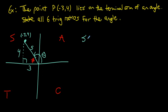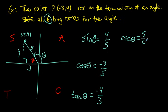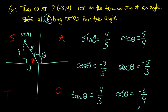The sine ratio is positive: sin θ = opposite/hypotenuse = 4/5. Cosine must be negative: cos θ = −adjacent/hypotenuse = −3/5. Tangent is also negative: tan θ = −opposite/adjacent = −4/3. For the reciprocal ratios: cosecant = 5/4, secant = −5/3, and cotangent = −3/4.